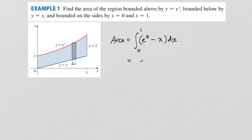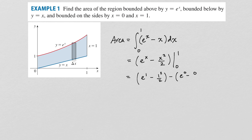The antiderivative of e to the x is e to the x, minus the antiderivative of x, which is x squared over 2. Applying the fundamental theorem of calculus and evaluating from 0 to 1: plugging in 1 gives e minus 1 half, and plugging in 0 gives 1. So the result is e minus 1 half minus 1, which equals e minus 3 halves.